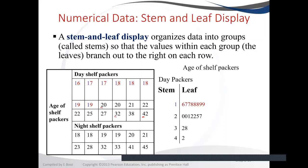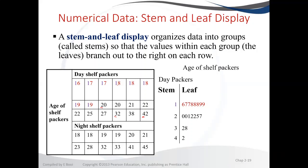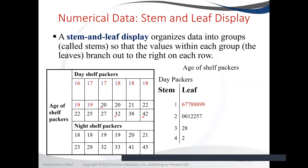Under stem 1 there is 6, which represents 16, then 17, 17, 18, 17, 17, 17, 18, 18, 18, 19, 19, 19, 19. You also need to repeat all of them, so if there are 17s repeating twice, you also need to repeat the 7s twice. That is how we read the stem.